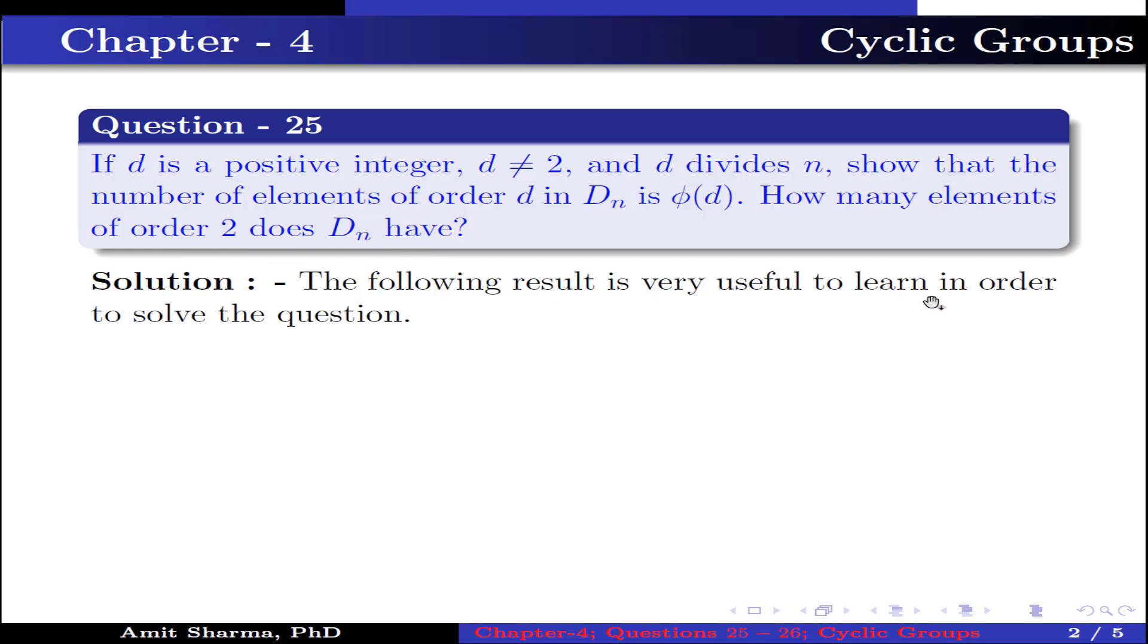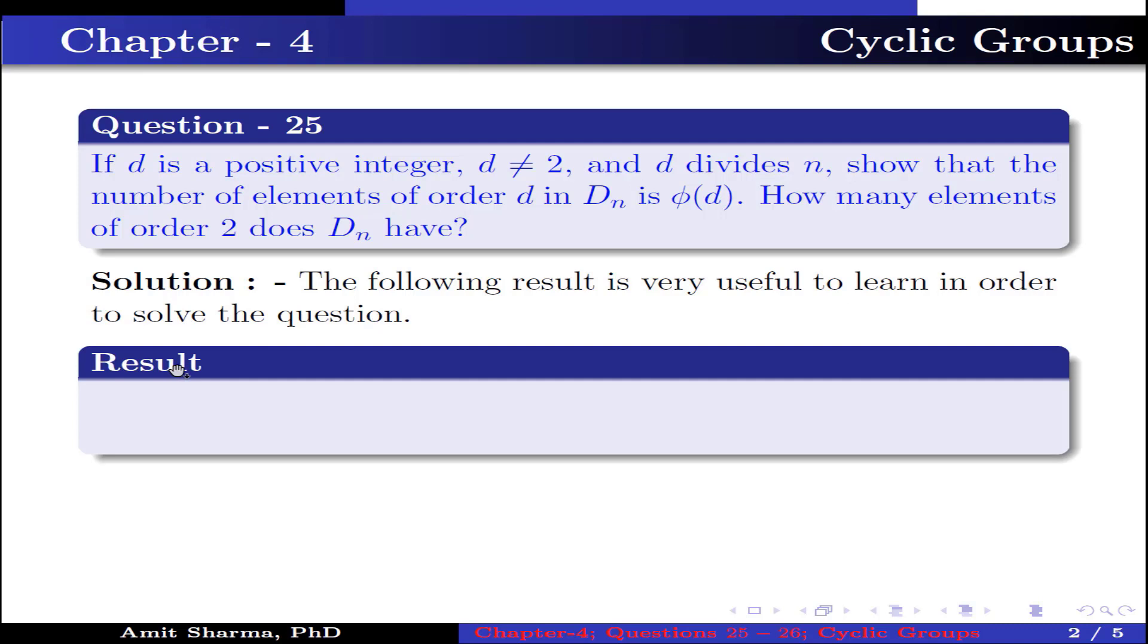The following result is very useful to learn in order to solve the question. If d is a positive divisor of n, the number of elements of order d in a cyclic group of order n is φ(d).